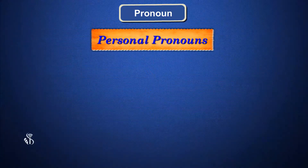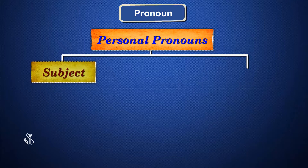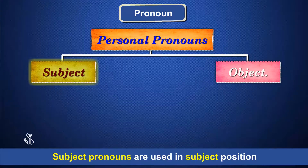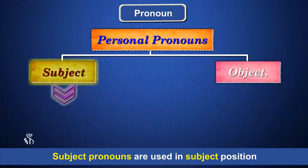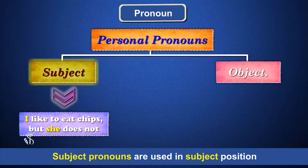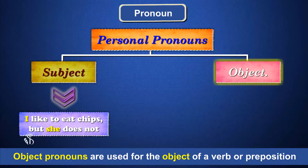Personal pronouns have two cases: subject and object. Subject pronouns are used in subject position — for example, 'I like to eat chips but she does not.' Object pronouns are used for the object of a verb or preposition — for example, 'John likes me but not her.'